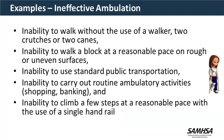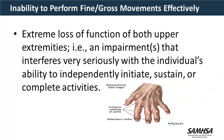Examples of ineffective ambulation include: inability to walk without use of a walker, two crutches, or two canes; inability to walk a block at a reasonable pace; inability to use standard public transportation; inability to carry out routine ambulatory activities such as shopping; and limitations in their ability to take a few steps at a reasonable pace without the use of a single handrail. We also consider loss of function in the upper extremities. We look at loss of grip strength, motor strength, and range of motion.